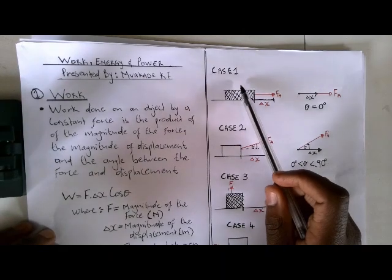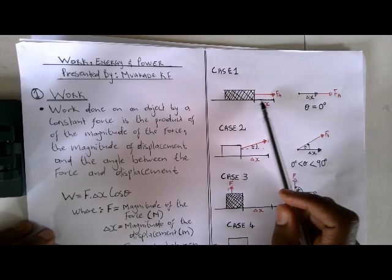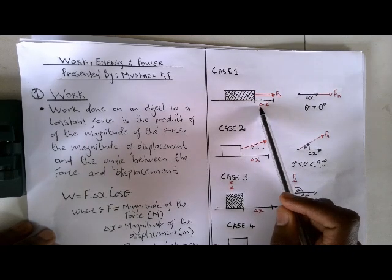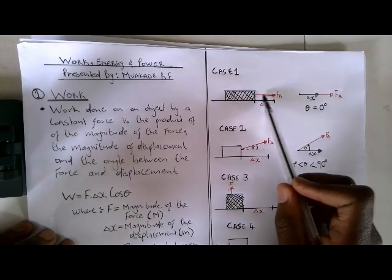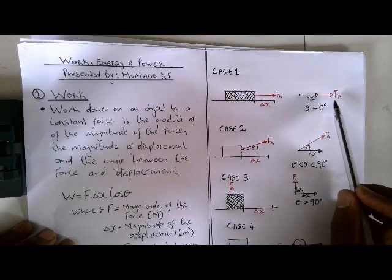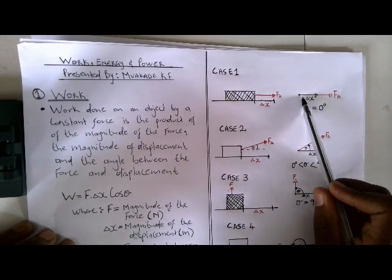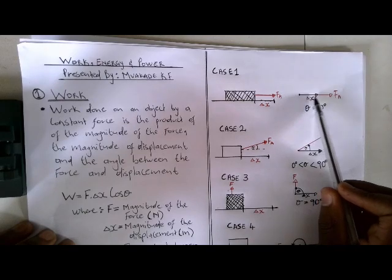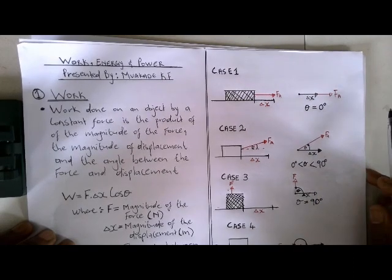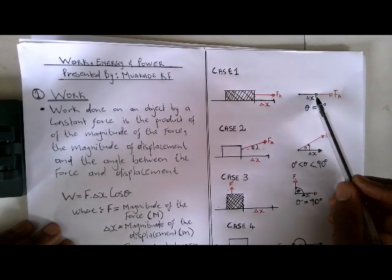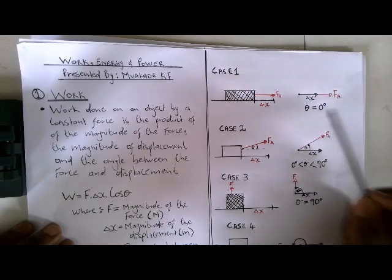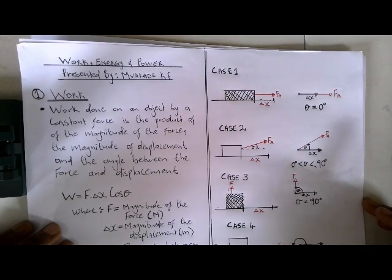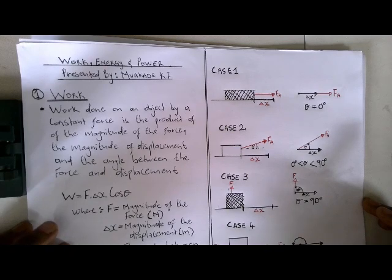Case one: the force is in the same direction as the displacement. The object is moving in that direction and the force is also in that direction. The black color represents the direction of displacement and the red represents the direction of the force. As we can see, the angle between the force and the displacement is zero — so θ equals zero degrees when force and displacement are in the same direction.